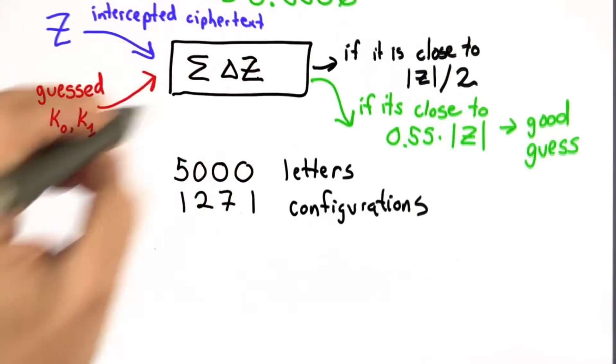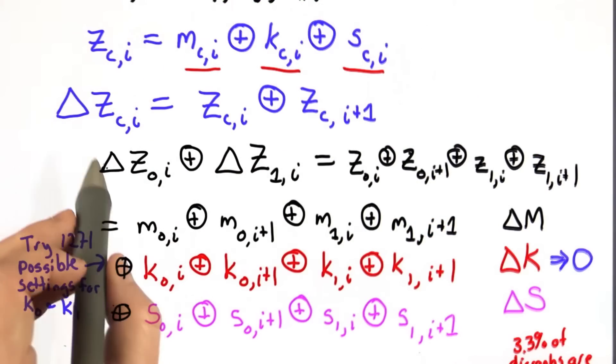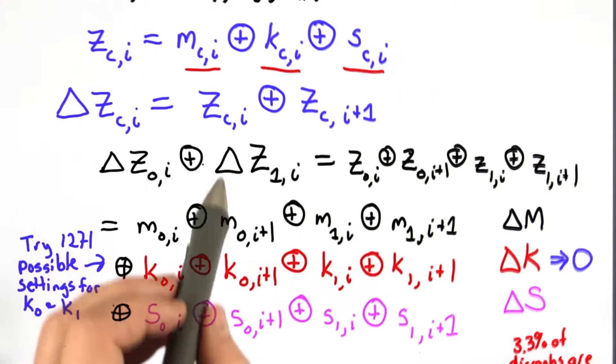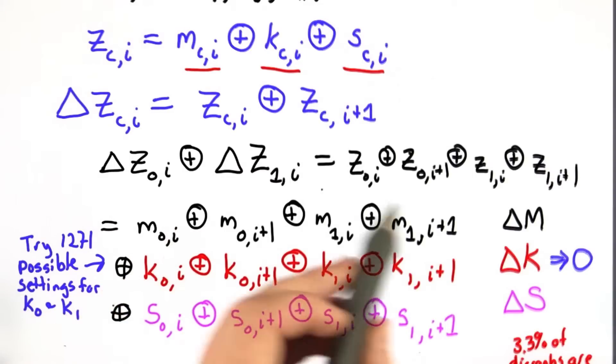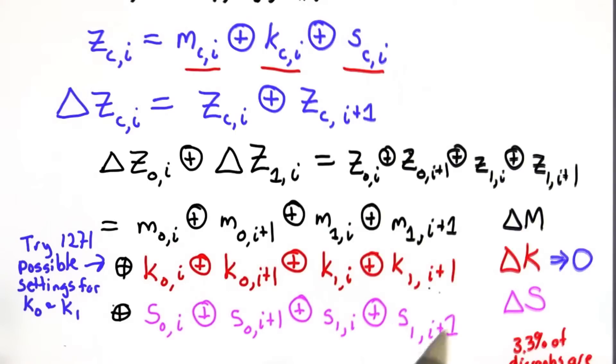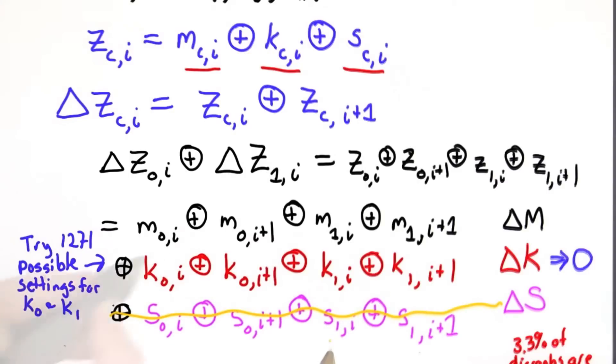You have to compute this double delta. What we're computing for each configuration is this double delta, the XOR of two deltas, and that involves computing all these XORs. We need the XORs of the keys XORed with the messages and the S wheels. But remember what we're doing is guessing that this is 0. We don't have any way to predict those S values. We're producing the key values...